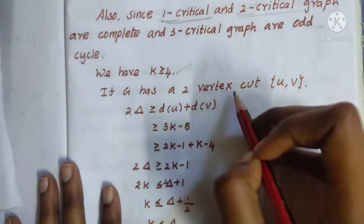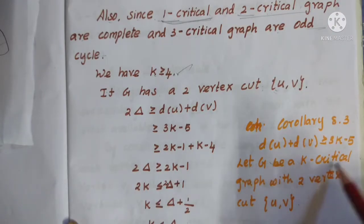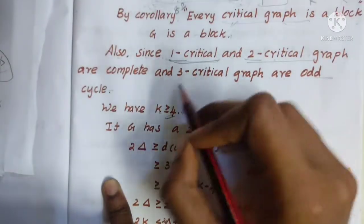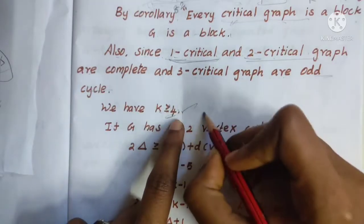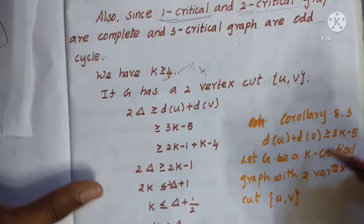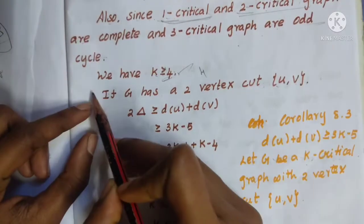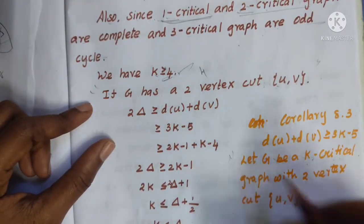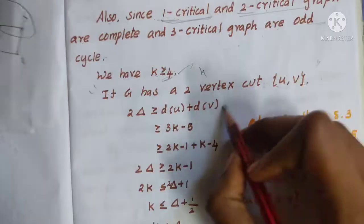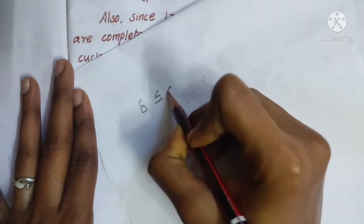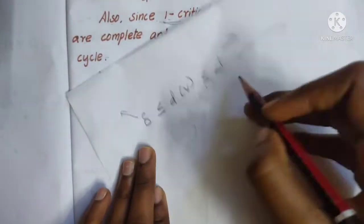If G has two vertices u and v, by lemma 8.3: let G be a k-critical graph with k greater than or equal to 4. For any two adjacent vertices u, v the condition is d(u) + d(v) ≤ 3k − 5. This is the condition. Also, Δ ≤ d(u) ≤ Δ gives the maximum and minimum degree bounds.